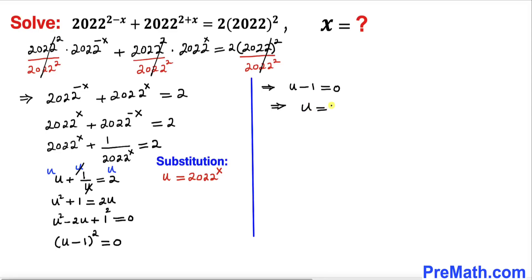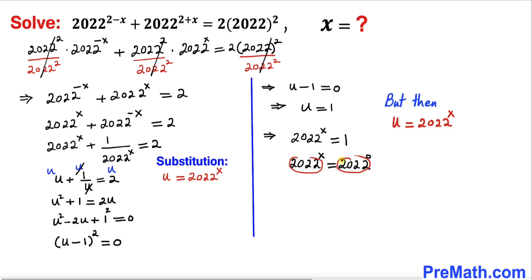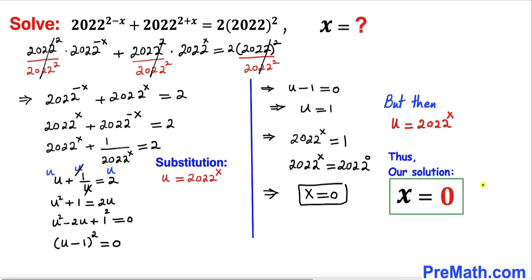So u equals 1. Since we know u equals 2022 whole power x, comparing these two equations we get 2022 whole power x equals 1. The right hand side can be written as 2022 whole power 0. Since the bases are the same, we can equate the exponents, so x equals 0. That is our solution.